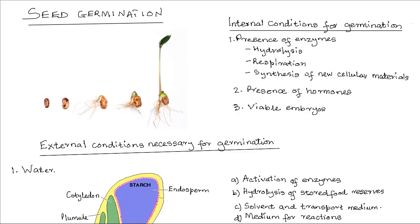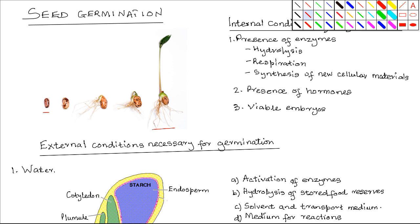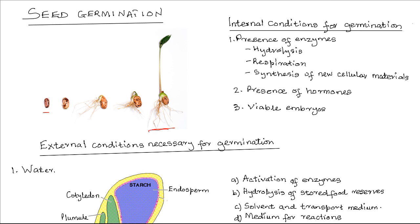Seed germination is the growth and development of a seed into a seedling. The emergence of the radicle through the seed coat marks the end of germination — so from the seed up to the emergence of the radicle marks the process of germination.